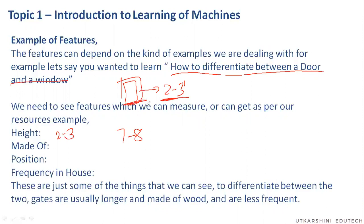So that is what we need to understand — the computer doesn't understand images, videos, or speech the way we do. It somehow converts all those pictures, images, and voices into numbers, and those numbers have patterns in them, because almost all windows will have a two to three foot height.